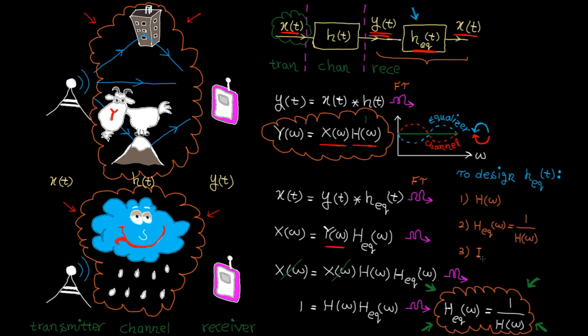Then the frequency response for the equalizer is the inverse of H(ω). Finally, we need to apply inverse Fourier transform to travel back to the frequency domain and find h_eq(t). So these three steps are all you need to design an equalizer.